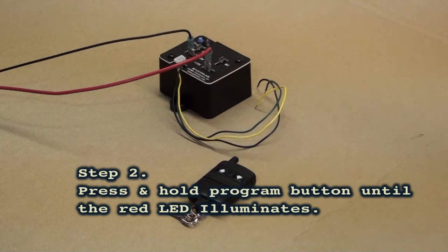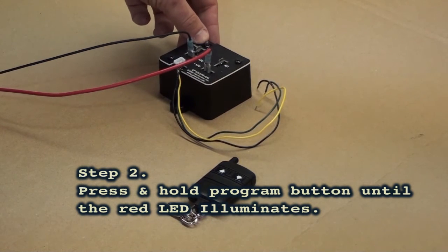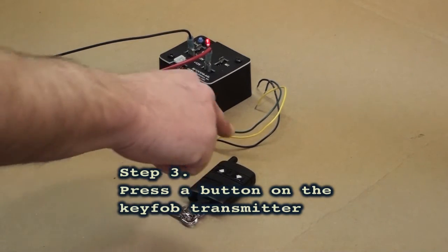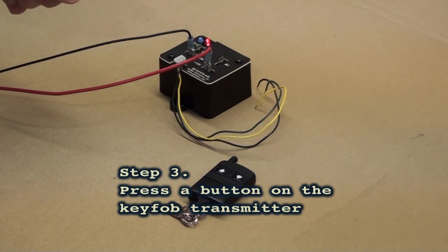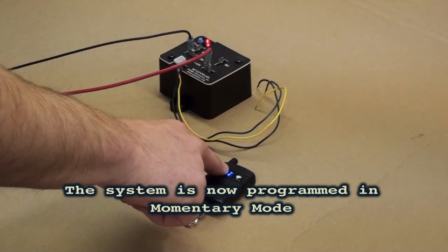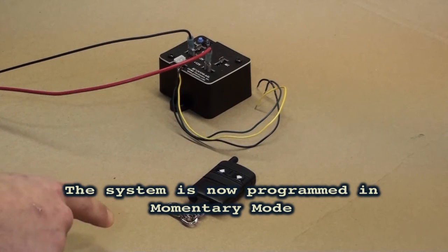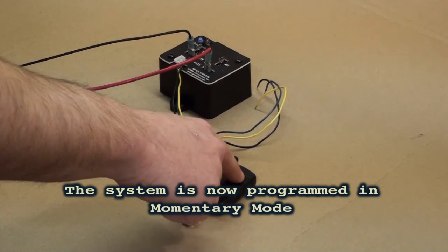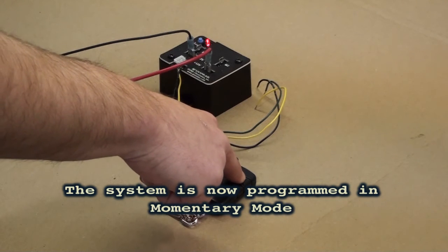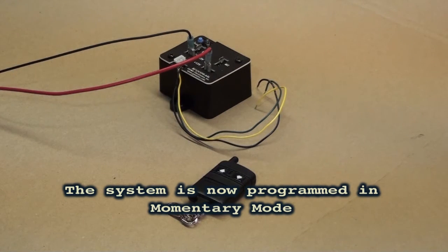To program a transmitter to the receiver, hold down the blue program button. The red LED will illuminate. Press a button on the transmitter. The LED will blink one time and then it will extinguish. The unit is now set up in momentary mode. Momentary mode means when I hold the button down the unit is active. When I release the button, the unit is off.